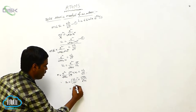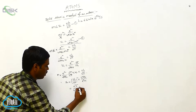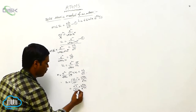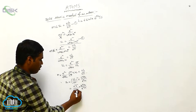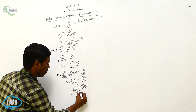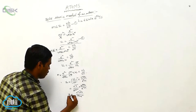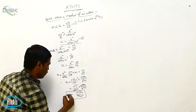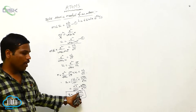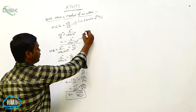We can write n² h² by 4π² into 4π ε₀ by e² m. Here 4 and π get cancelled, giving us n² h² ε₀ by π m e². This is the radius of the electron orbit: rn = n² h² ε₀ / π m e².